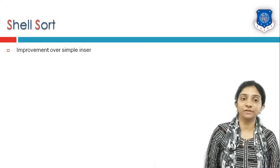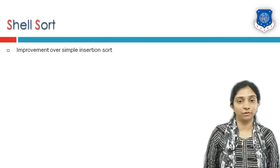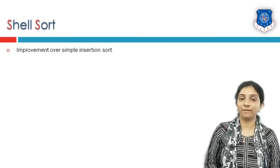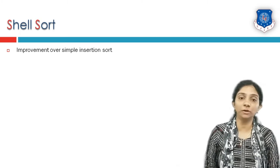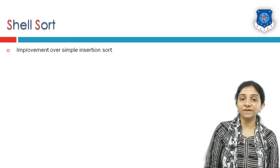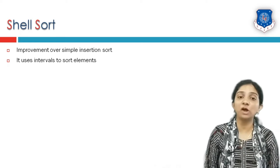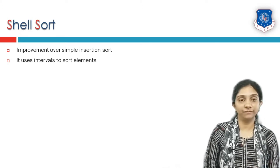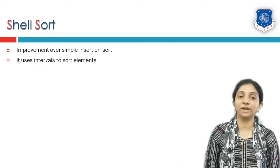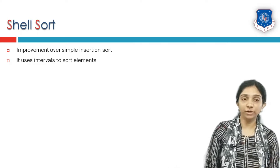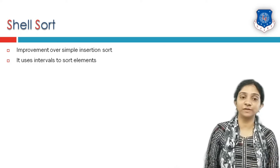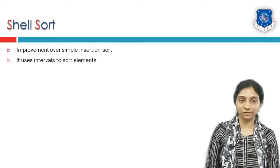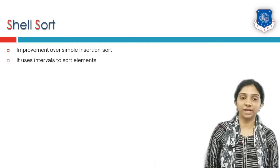Shell sort is an improved version of insertion sort. In our previous video we have already seen how insertion sort works. But in some cases insertion sort underperforms depending on the given input list of elements. So in order to cope with the performance issues of insertion sort, we make use of a modified insertion sort which is shell sort.